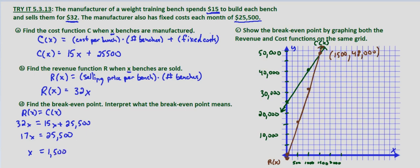If we put X equals 1,500 into either of these equations, we should get, we already know for C of X we get 48,000. So let's check with R of X. R of 1,500 equals 32 times 1,500, which equals 48,000. And it does equal 48,000.